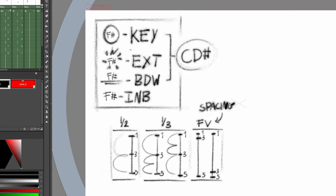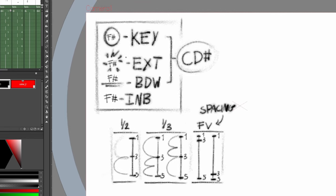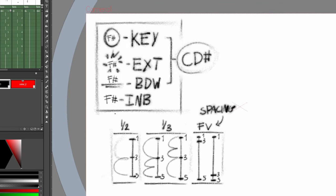The F with the hashtag next to it means our frame number. If our frame number is circled, it's going to be a key. If it has a little pow effect around it, it's going to be an extreme. And if it's underlined twice, it's going to be a breakdown. And finally, if the frame number on the chart is alone with no symbols around it, then it's going to be an in-between.